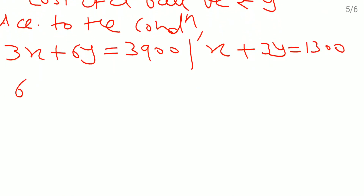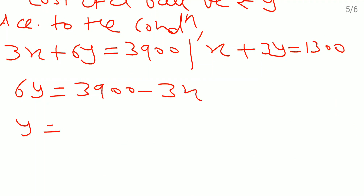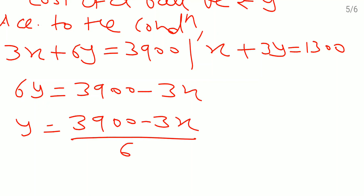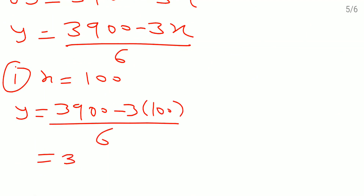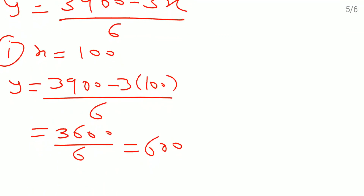The first equation I will write in this format: 6y = 3900 − 3x, that means y = (3900 − 3x) / 6. Now I will find 3 solutions. First: I will take x = 100, so y = (3900 − 300) / 6 = 3600 / 6 = 600. So the first solution is (100, 600).